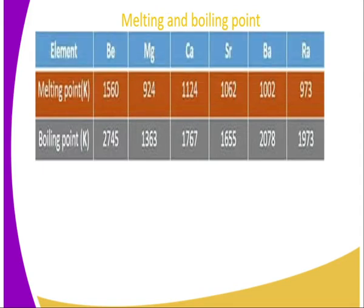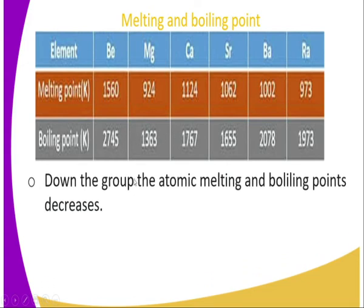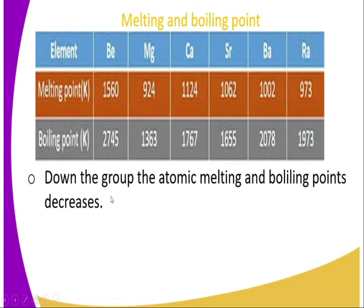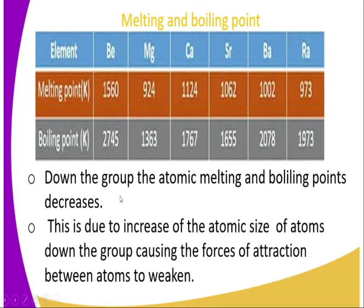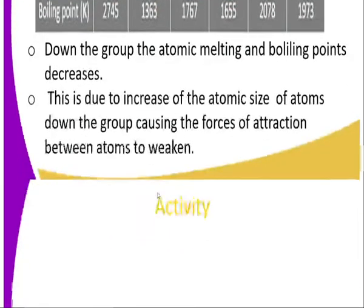Melting and boiling points. As you can see from this table, the melting point of beryllium, magnesium, calcium, and strontium is indicated. The melting point decreases down the group. Down the group, the melting and boiling point decreases, and this is due to the increase of atomic size of the atoms down the group, causing the forces of attraction between atoms to weaken.